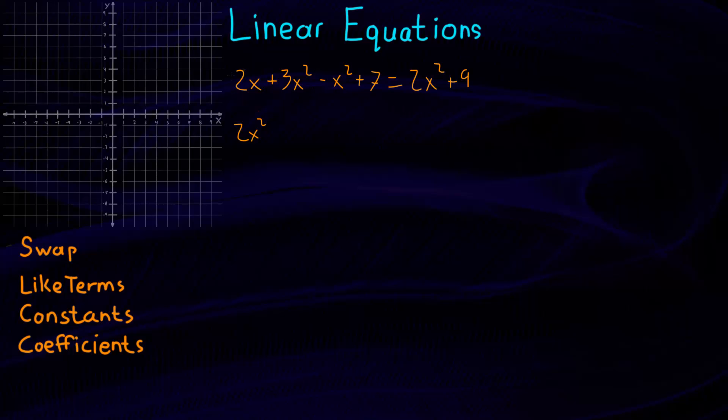And what's the next highest order? It's right here, we have plus 2x. And what have we got left? Our constant is 7. So we write that, and this is equal to 2x squared plus 9.